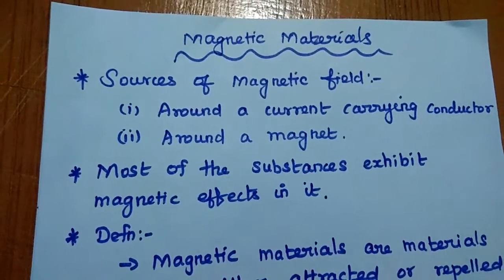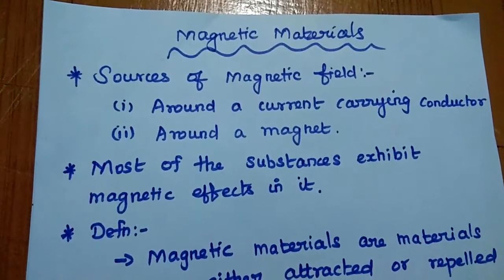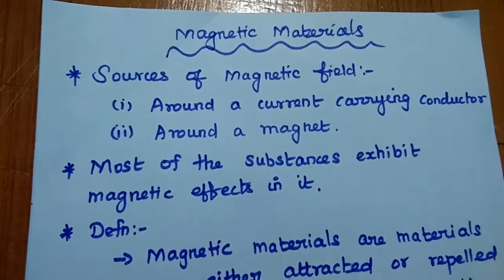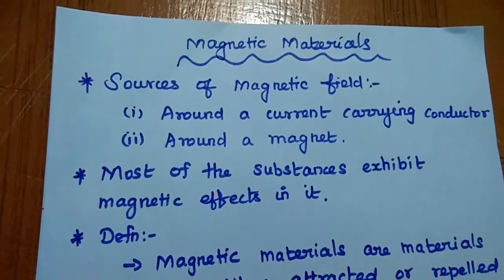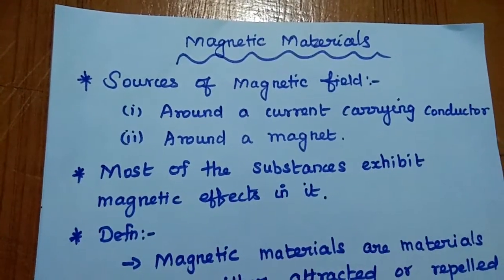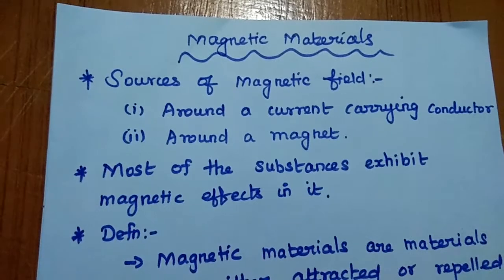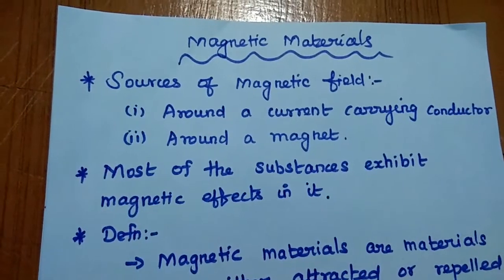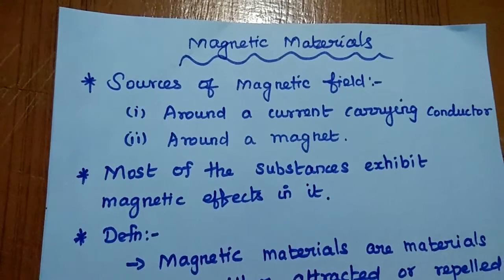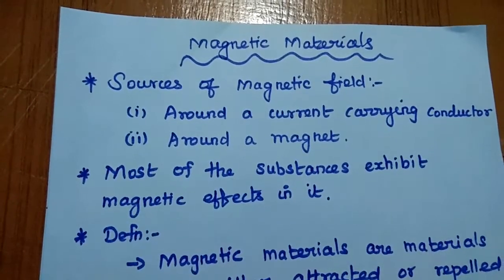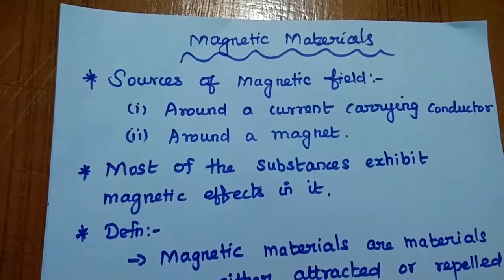In nature, most of the substances exhibit magnetic effects. How is it possible? In general, an electron revolving around the nucleus of its atom forms a tiny electric current loop, and then it produces a magnetic field. So naturally, most of the substances exhibit magnetic effects.